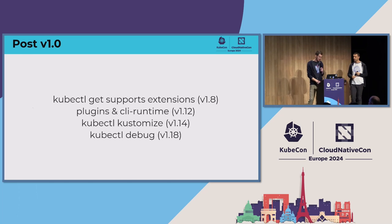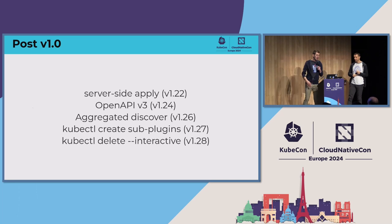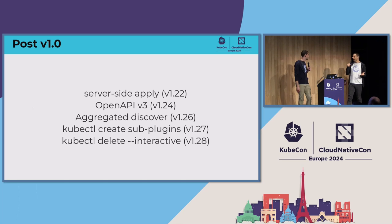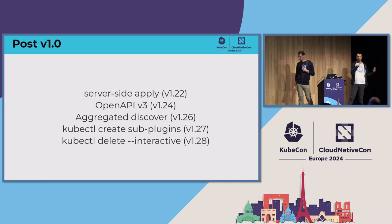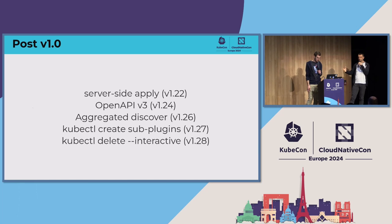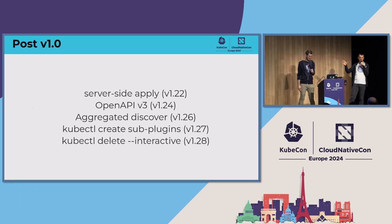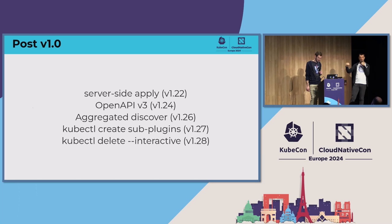kubectl — the kustomize bug dropped in 1.18. Other big ones that landed: server-side apply, which we'll talk about in a little bit. We're grappling with how to do kubectl apply that we currently have and how to make it work with server-side apply. There are issues with client-side apply — primarily the fact that it has limitations with regards to the size of the annotation. If you have issues running into client-side limitations, please switch over to server-side apply.